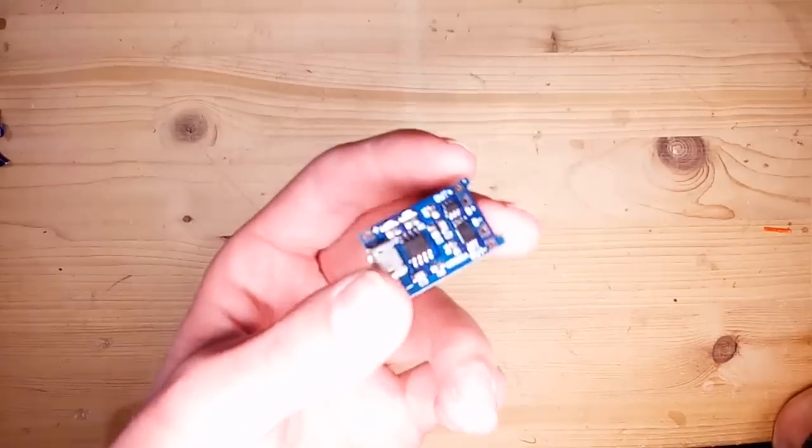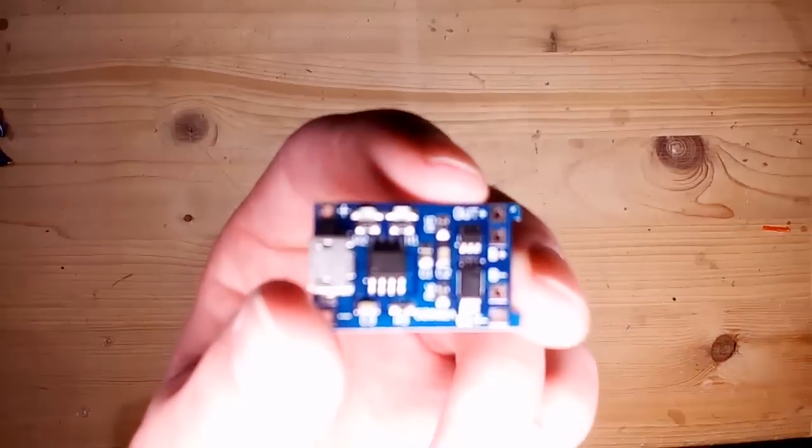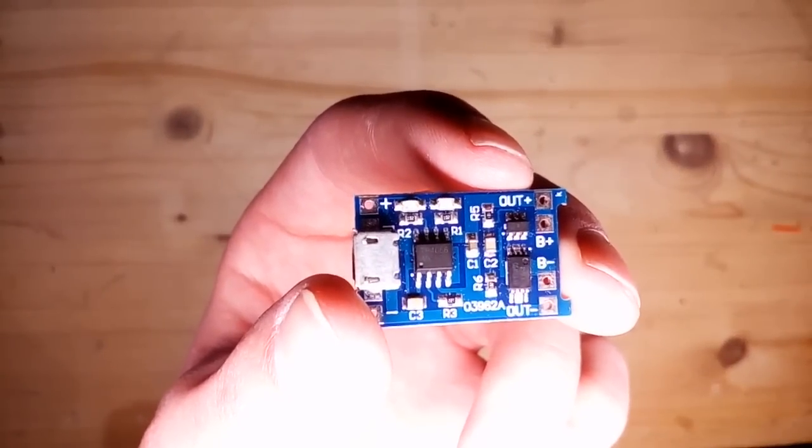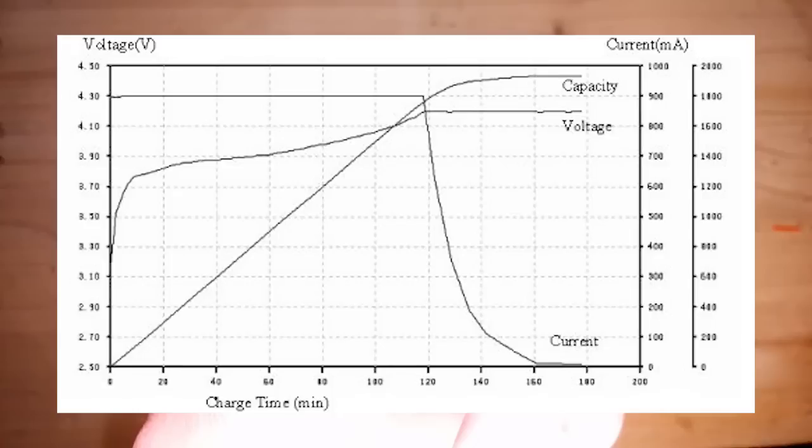In the beginning I told you that I will explain to you how those two boards work. Let's start with the lithium ion protection and charging board. The first thing it does is of course charging. A lithium ion battery has a certain charging pattern. When it's nearly full the current drops. The charger will recognize that and only charge it up to 4.2 volts.